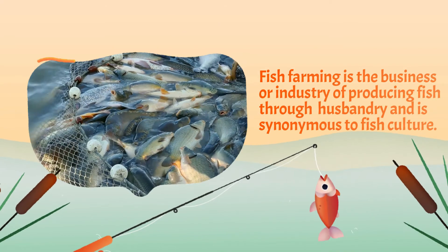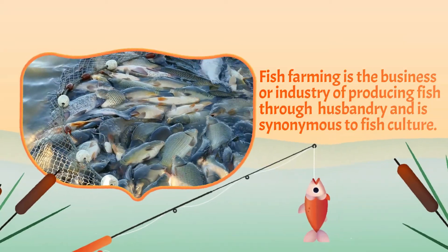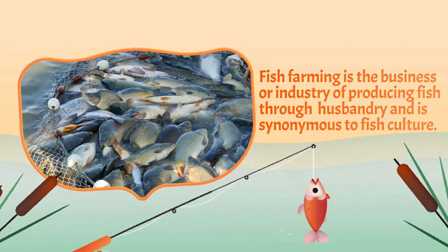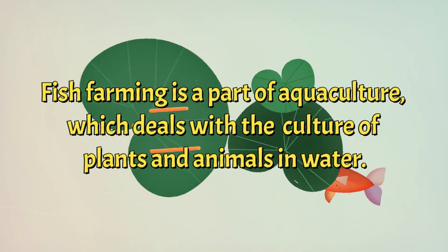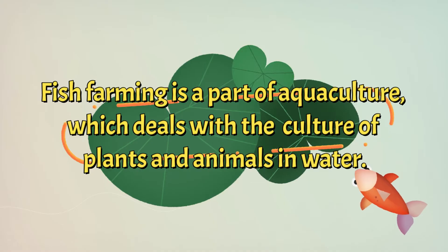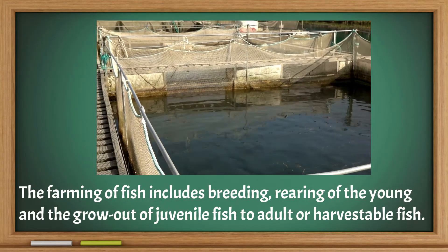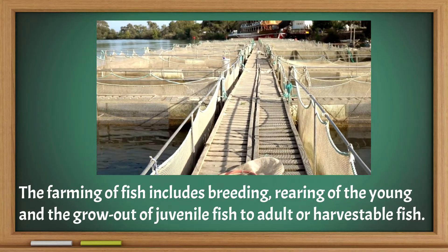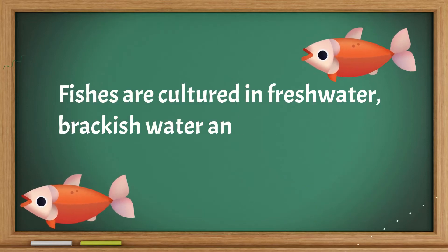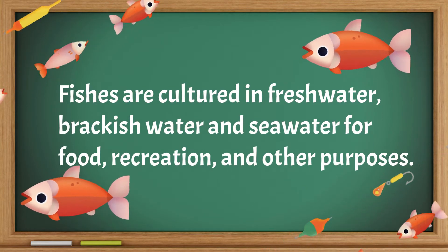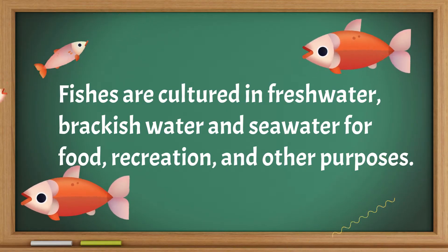Fish farming is the business or industry of producing fish through aquaculture and is synonymous to fish culture. In broader terms, fish farming is a part of aquaculture, which deals with the culture of plants and animals in water. The farming of fish includes breeding, rearing of the young, and the grow-out of juvenile fish to adult or harvestable fish. Fishes are cultured in freshwater, brackish water, and seawater for food, recreation, and other purposes.